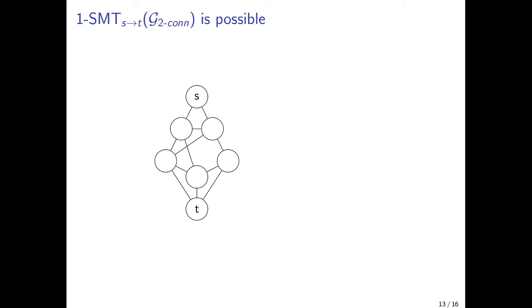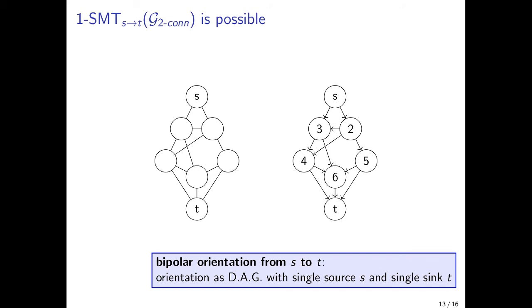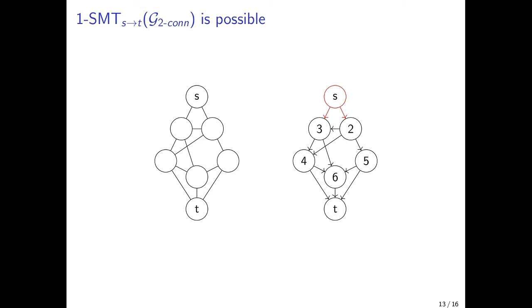So starting with the case when the graph is public, since it's public, we can canonically fix a bipolar orientation from S to T, otherwise known as an ST orientation. So what this does is it fixes an ordering from 1 to N, where S has rank 1 and T has rank N. And the protocol works as follows. In the first round, S additively secret shares the message for T in two parts and sends them to his descendants, so one part for 2, one part for 3. In the second round, the player with rank 2 in the ordering takes the share she received from S and secret shares it between 3, 4, and 5. In the third round, the player with rank 3 adds the share he received from S in the first round and the share he received from 2 in the second round, takes this sum, additively secret shares it in two parts and sends one share to 4, one share to 6.